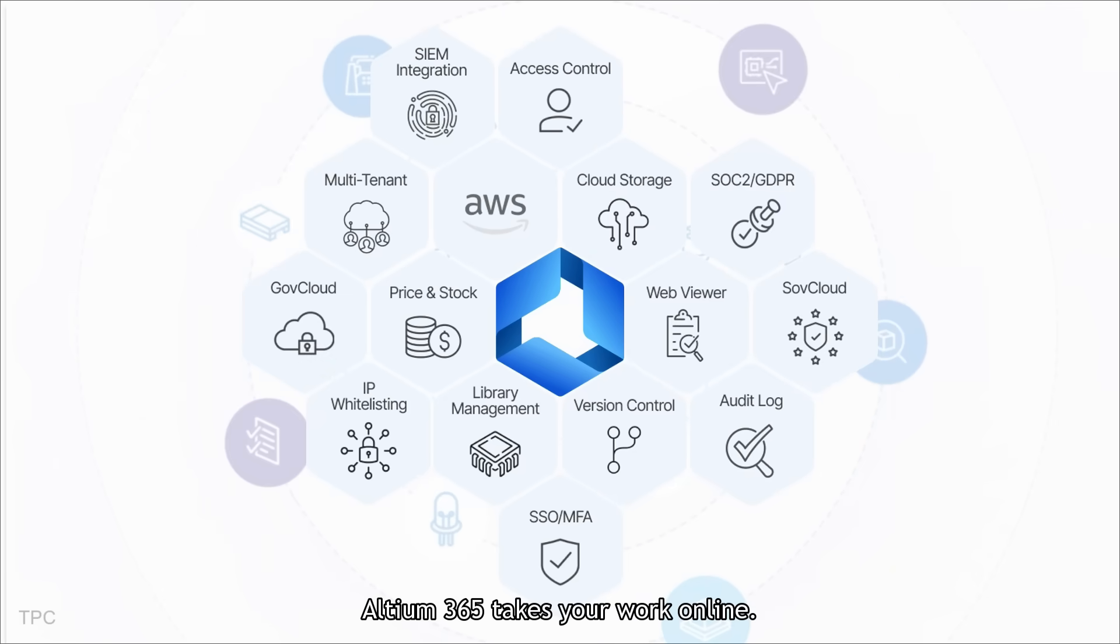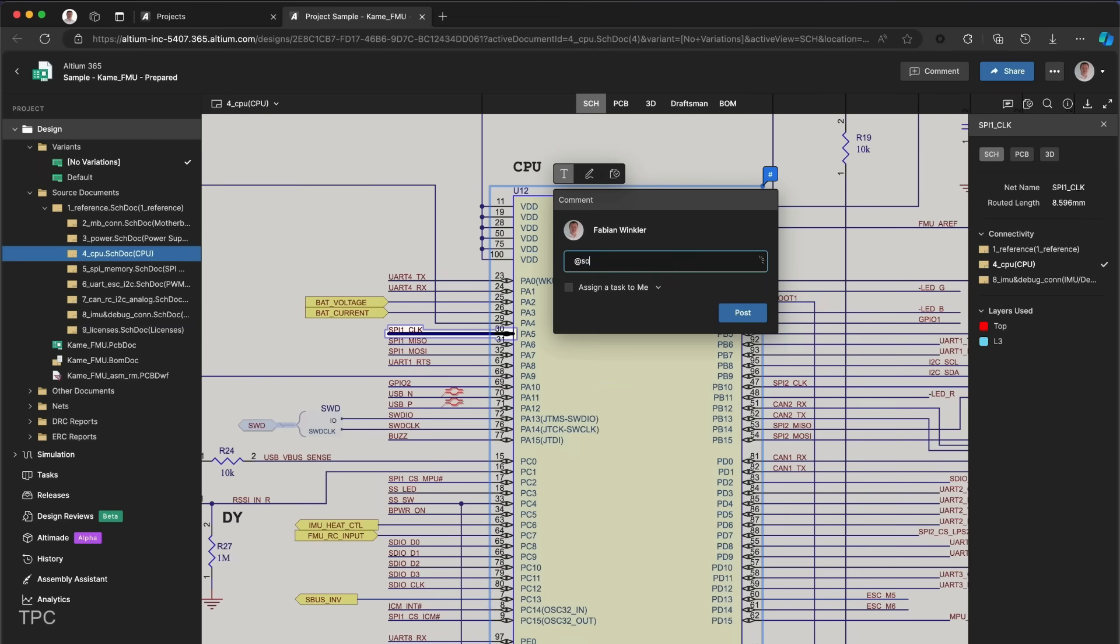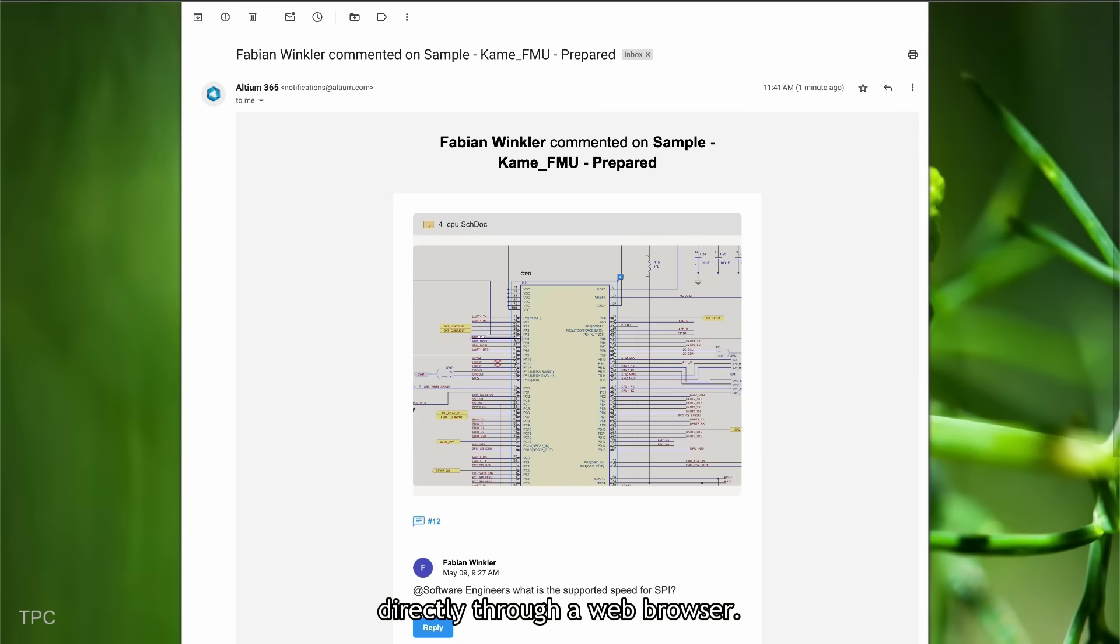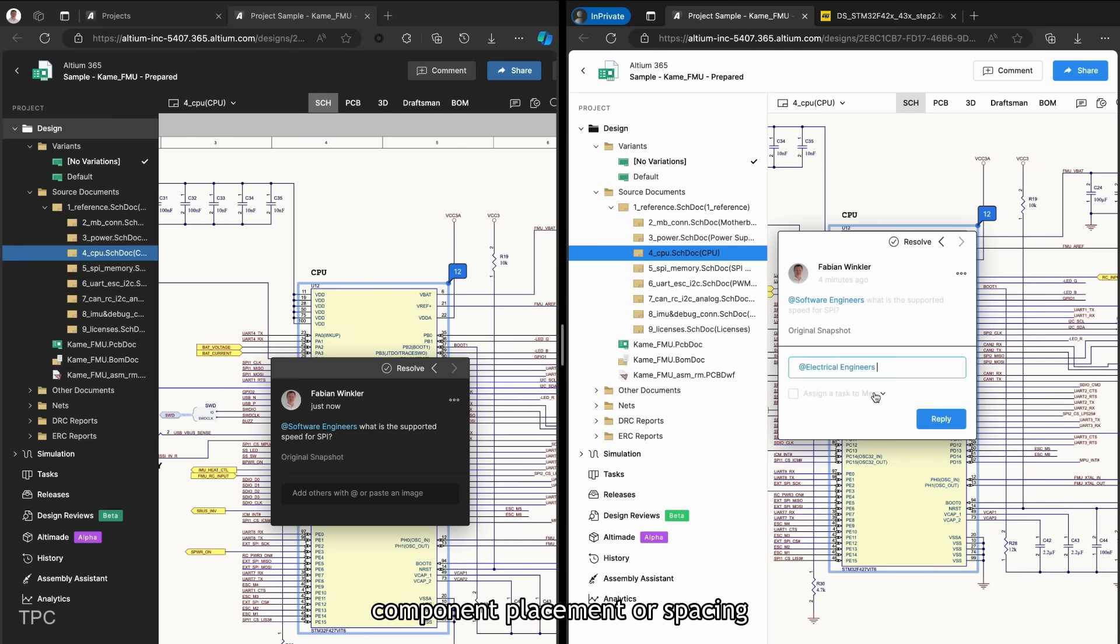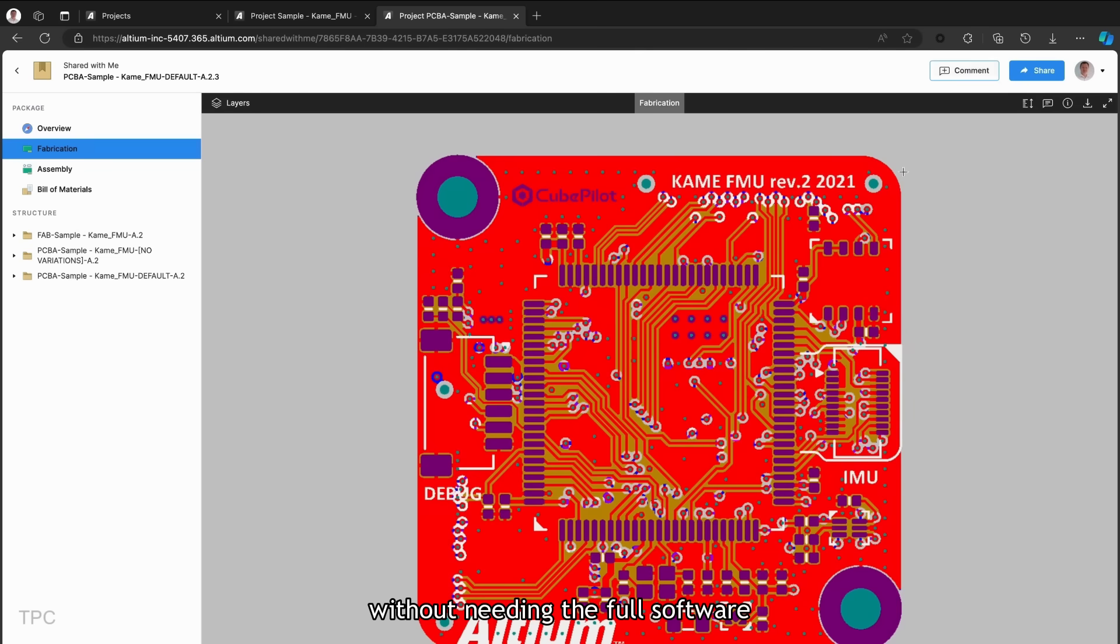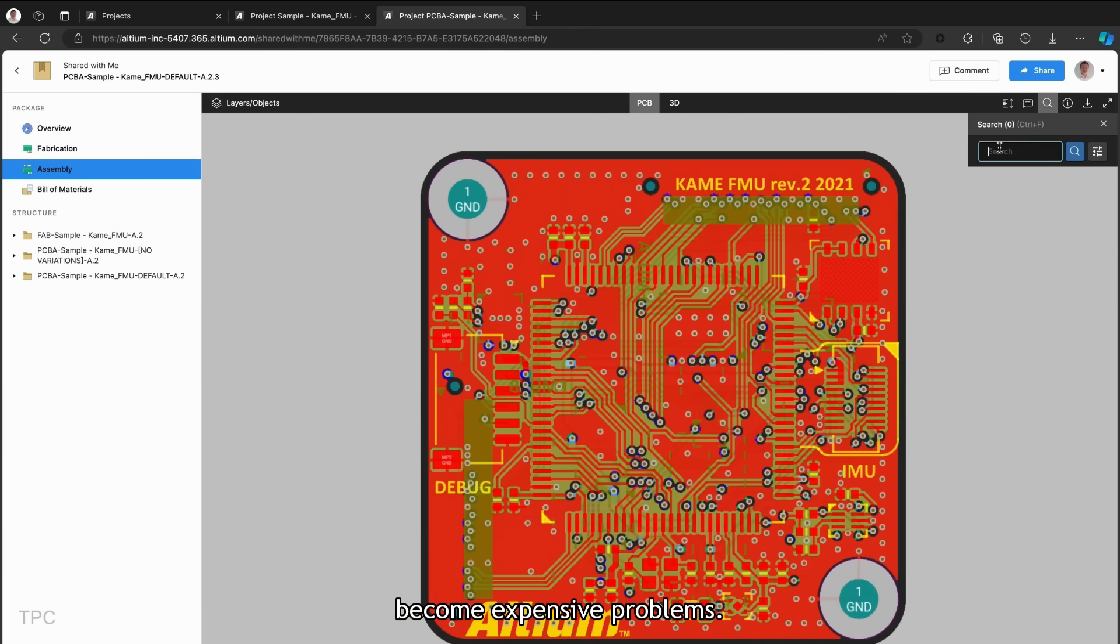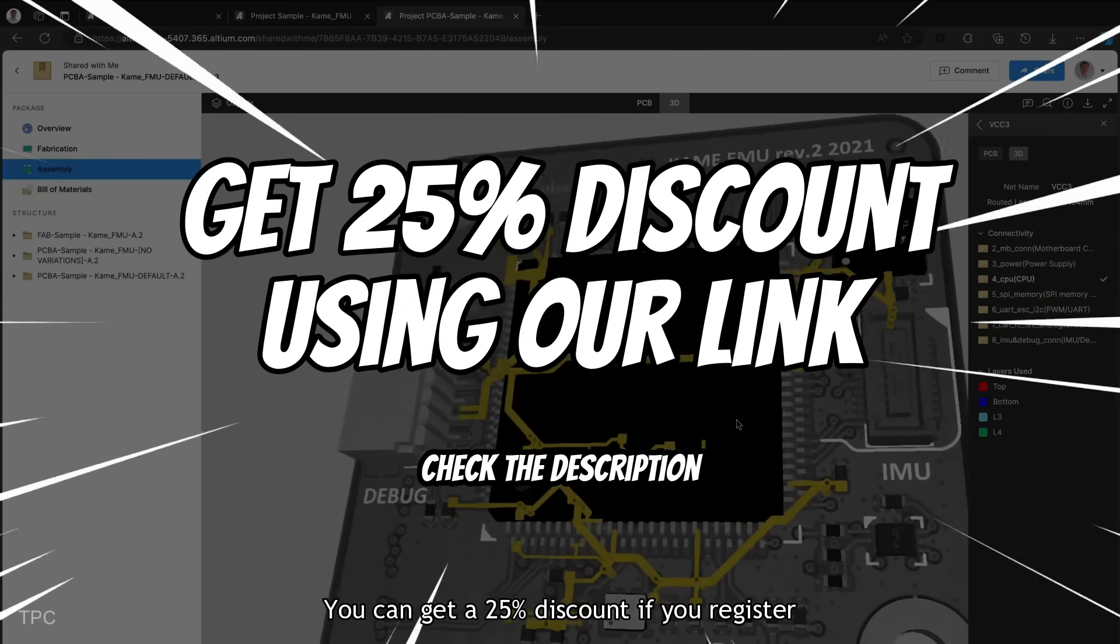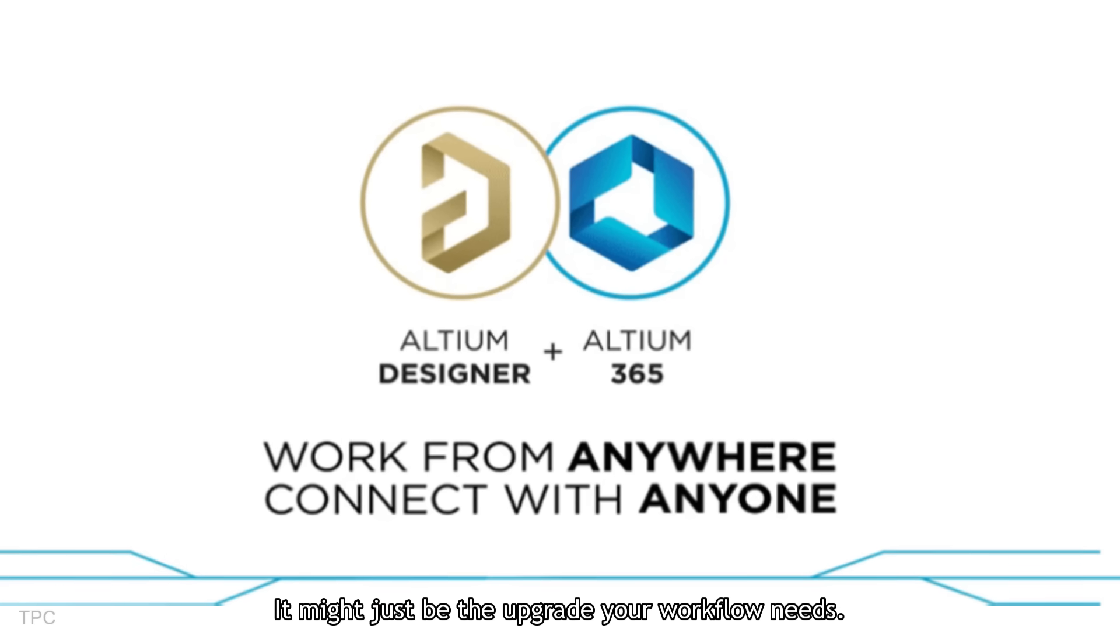It allows you to view, edit, and share your designs from anywhere. You can even invite team members or manufacturers to review your projects directly through a web browser. They can leave comments, suggest changes, and double-check important details like component placement or spacing without needing the full software installed. This makes working with teams or preparing for production much easier, and helps you catch mistakes before they become expensive problems. And the best part? You can get a 25% discount if you register using the special link we've added in the description. Give it a try! It might just be the upgrade your workflow needs.